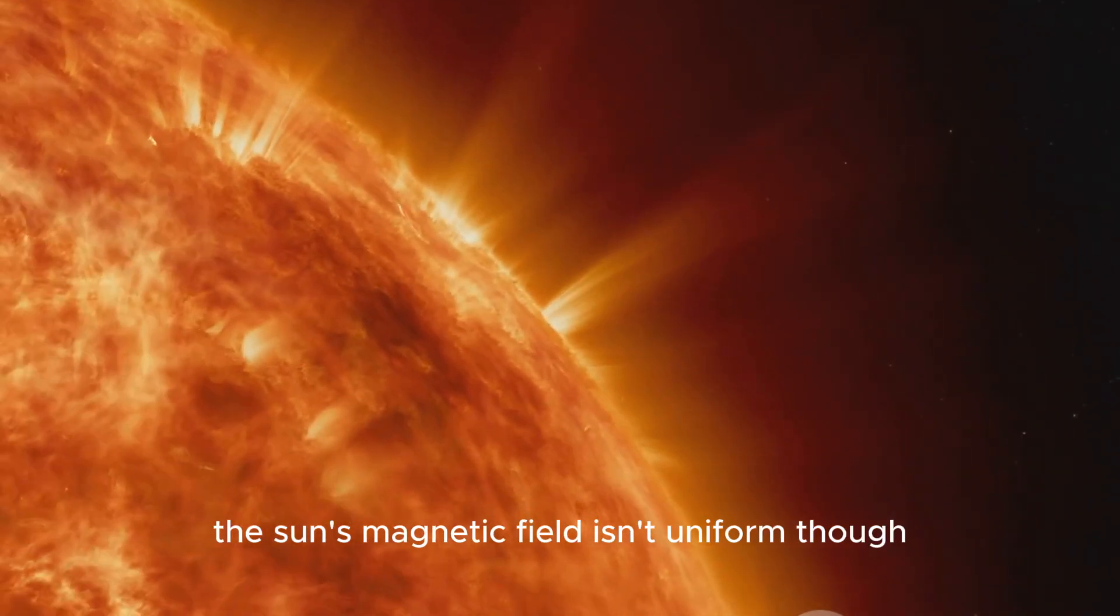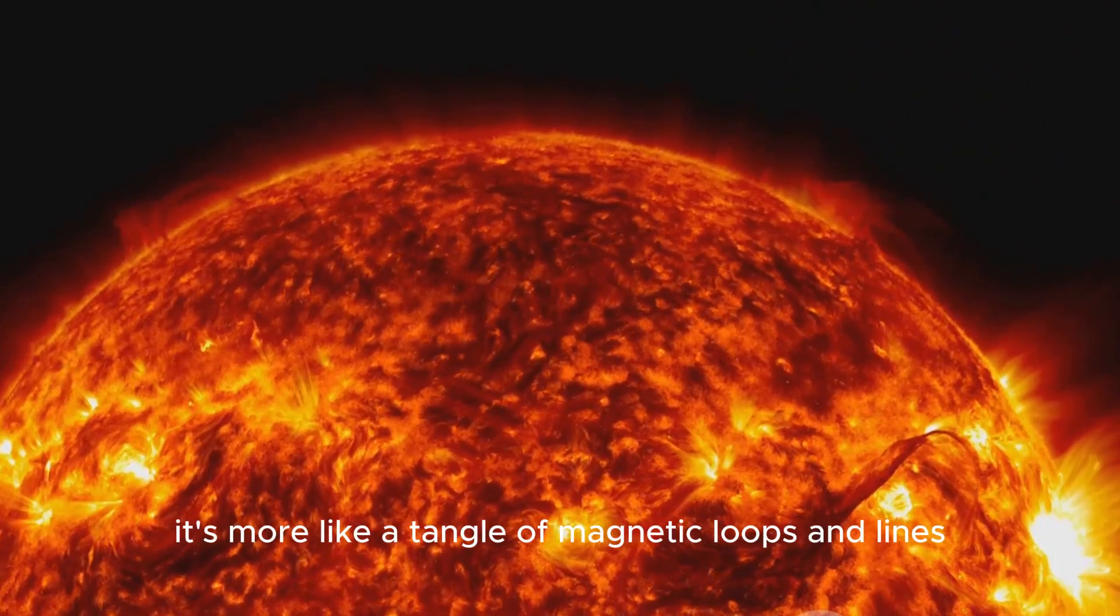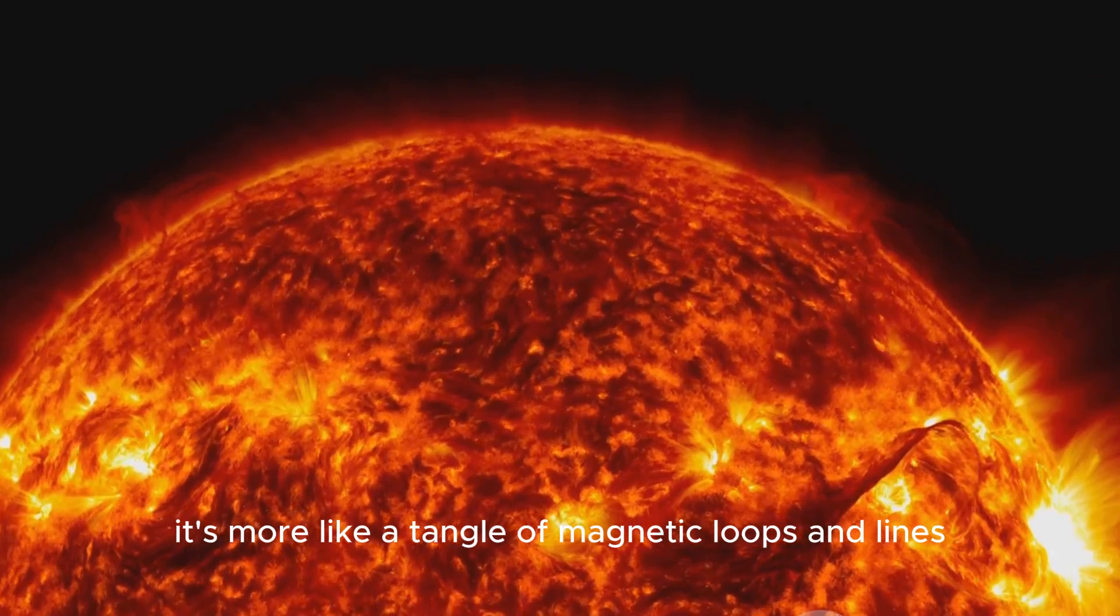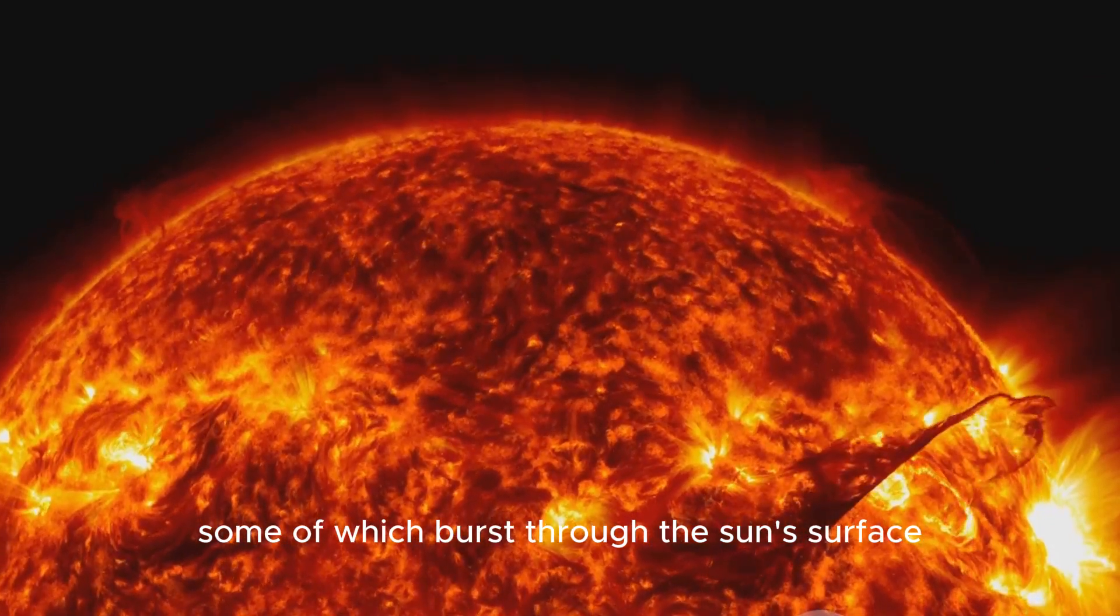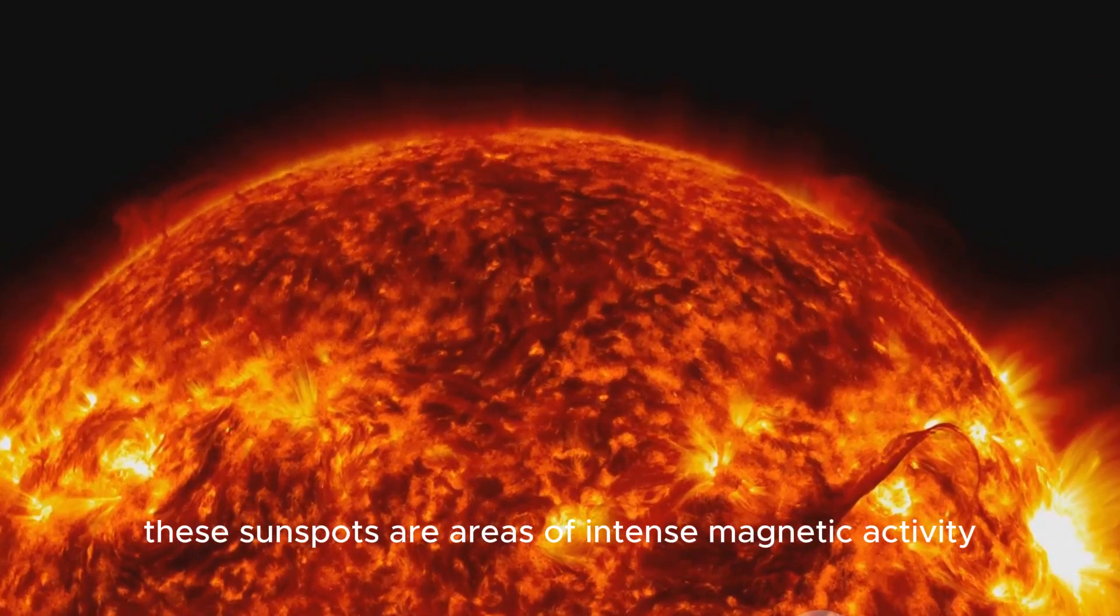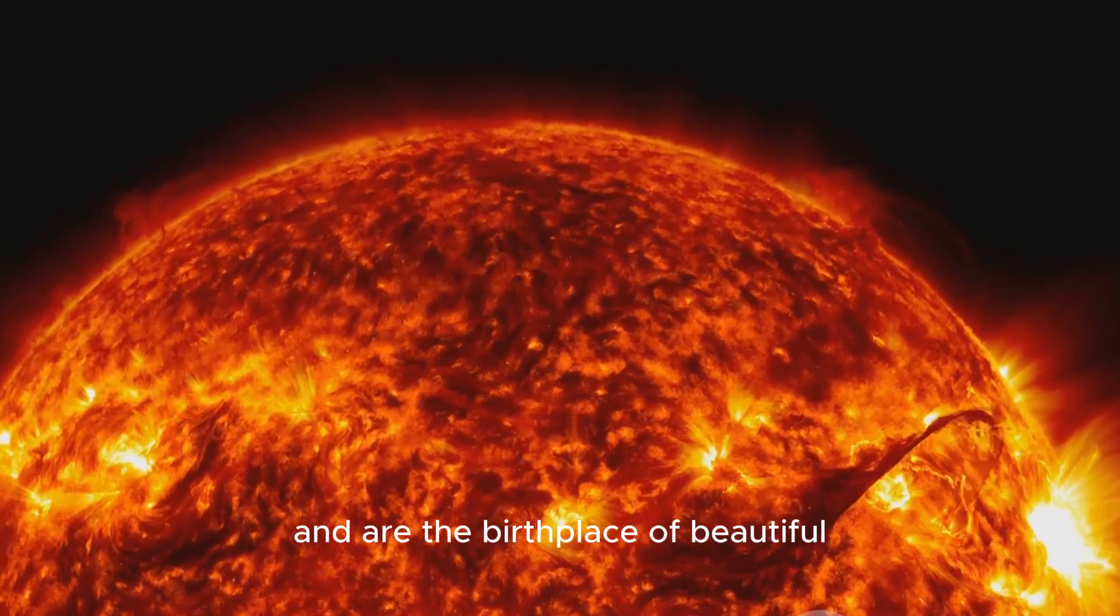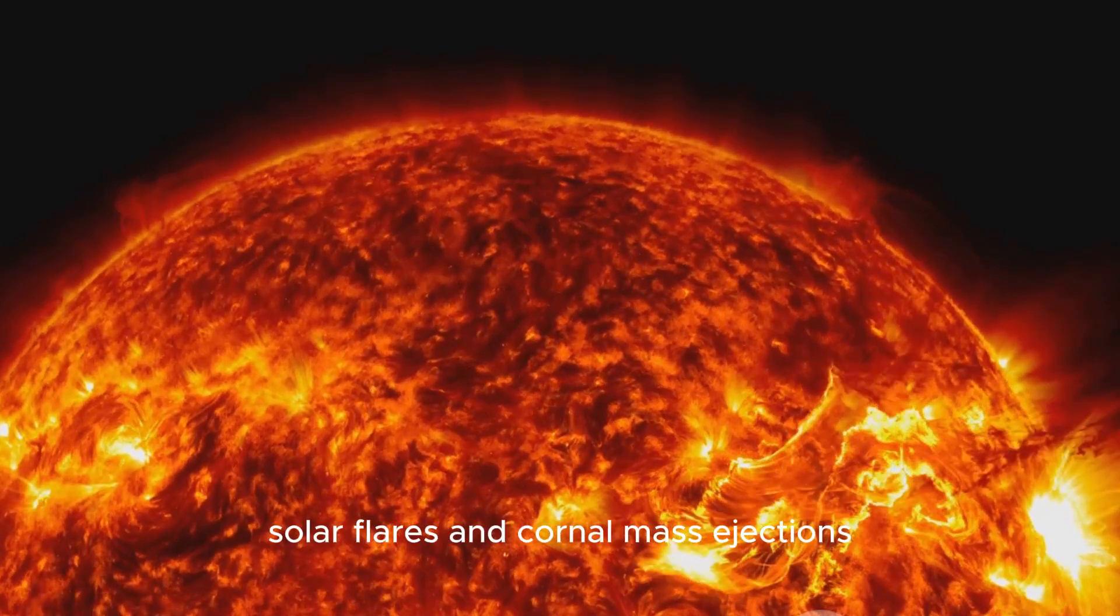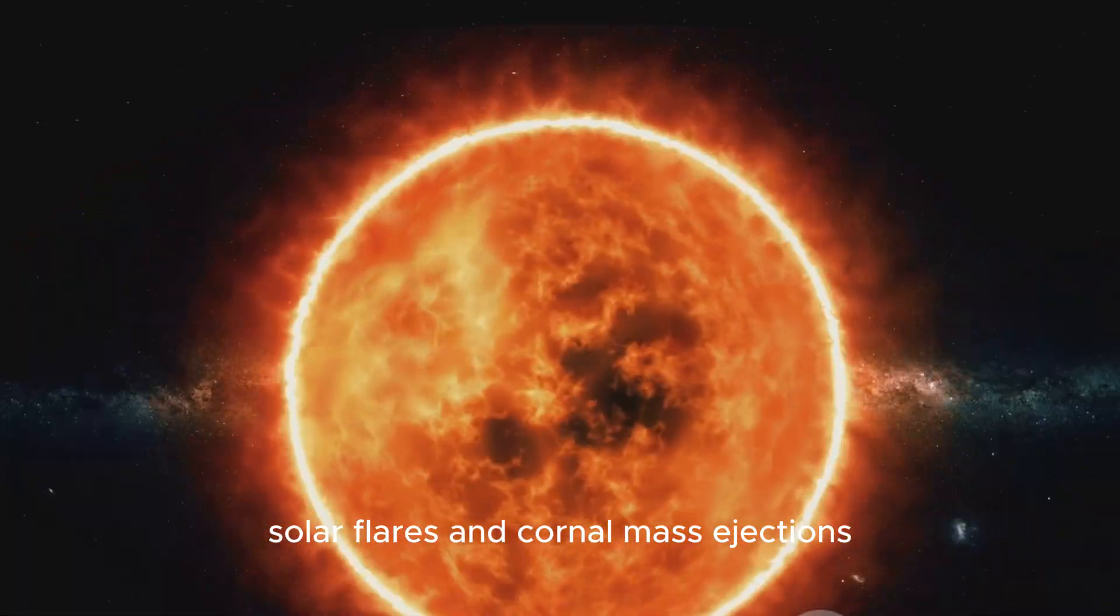The sun's magnetic field isn't uniform, though. It's more like a tangle of magnetic loops and lines, some of which burst through the sun's surface, creating sunspots. These sunspots are areas of intense magnetic activity and are the birthplace of beautiful, yet potentially disruptive, solar flares and coronal mass ejections.